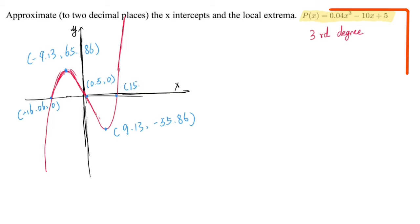Okay, so let's write them out on the right side. So for x-intercepts, there are three. First one is (-16.06, 0). Next one is (0.50, 0), and the last one is (15.56, 0).